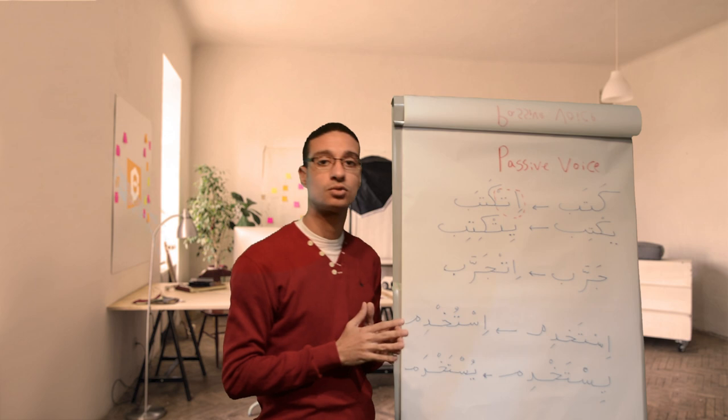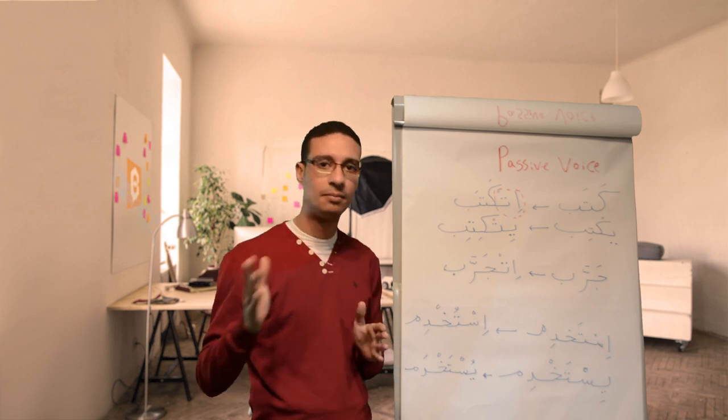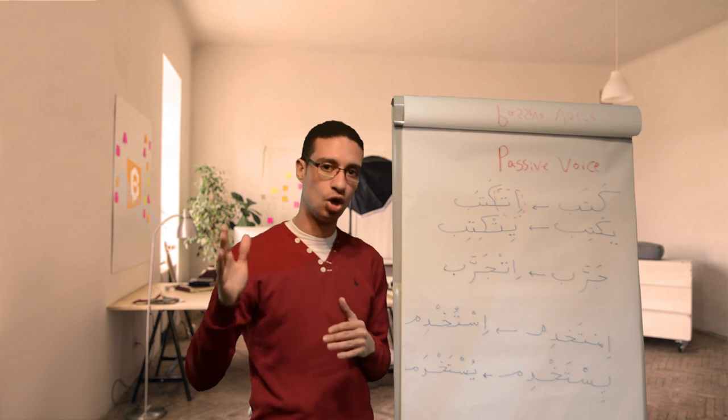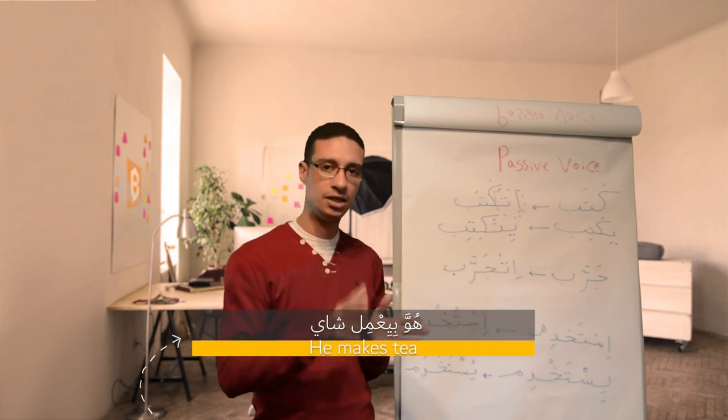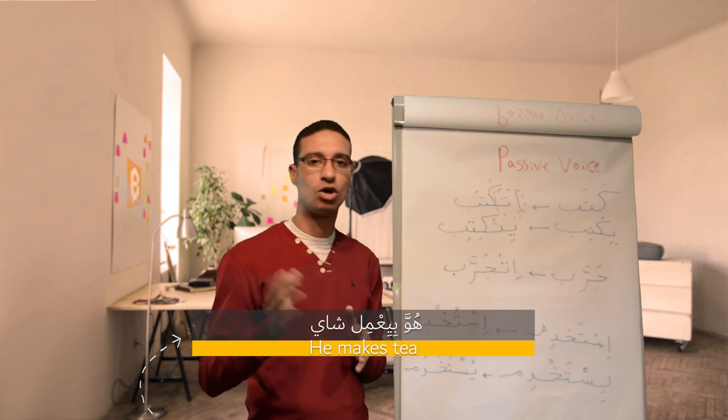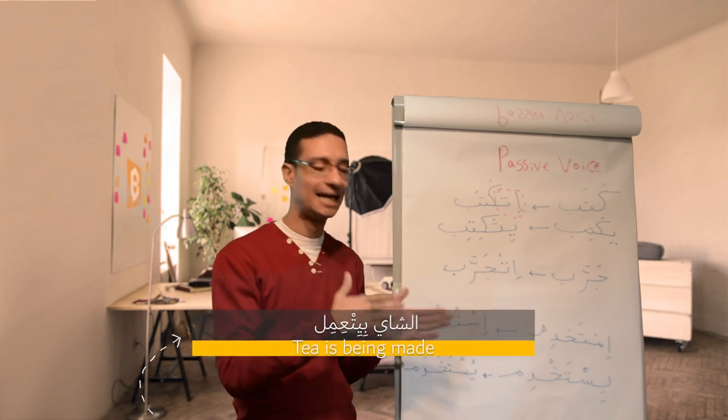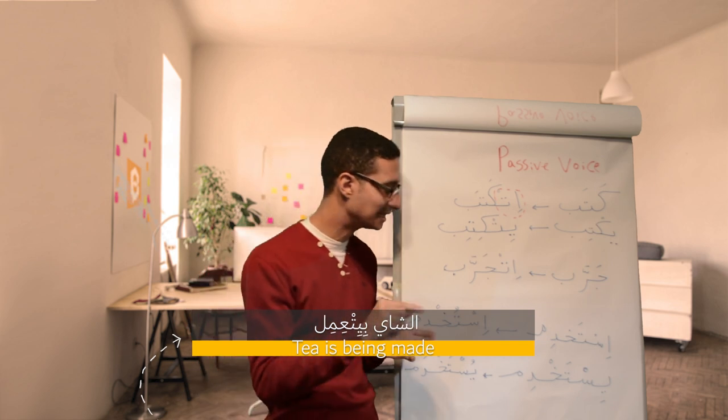Another example with a three-letter verb is 'amal ya'mal. So to do, to make. Huwa bi-ya'mal shai. He makes tea. Huwa bi-ya'mal shai. Al-shai bi-yit-'amal. That's correct. Bi-yit-'amal.